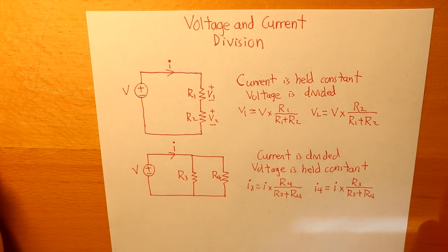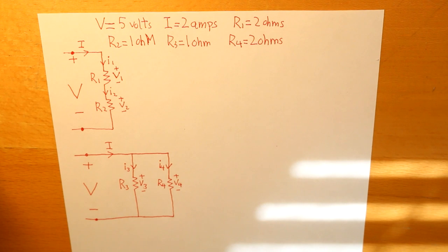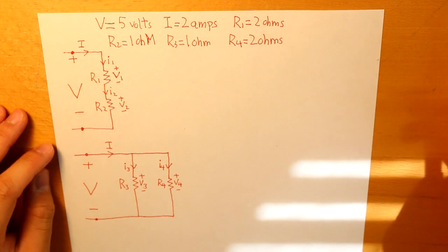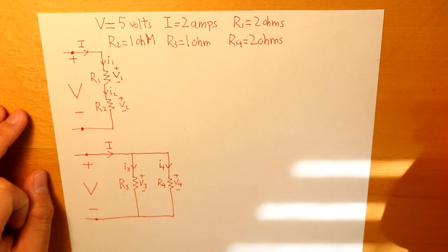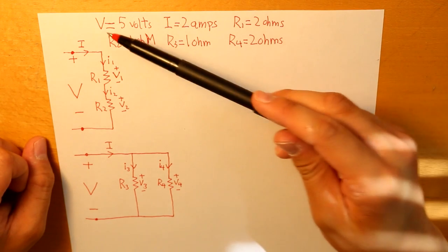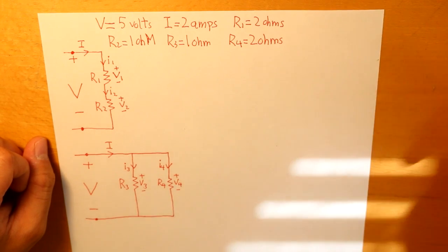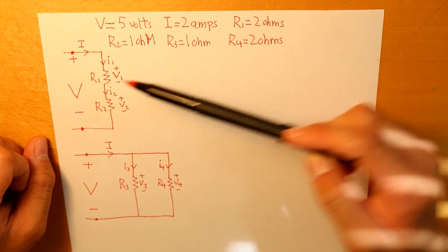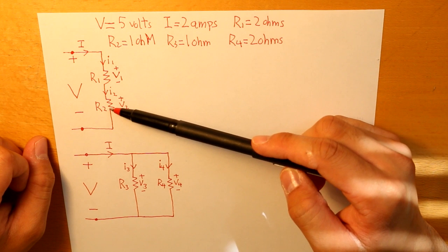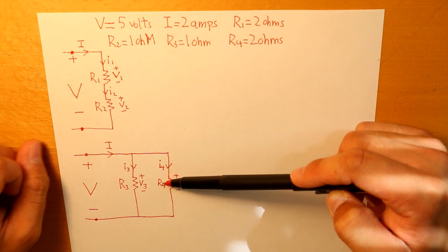Now we have two examples on voltage and current division. We're given that the total voltage is 5 volts and the total current is 2 amps in these two circuits. R1 = 2 ohms, R2 = 1 ohm, R3 = 1 ohm, and R4 = 2 ohms. The question is to find the current and voltage for all four resistors.